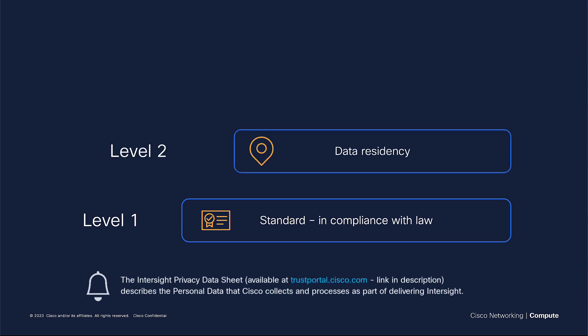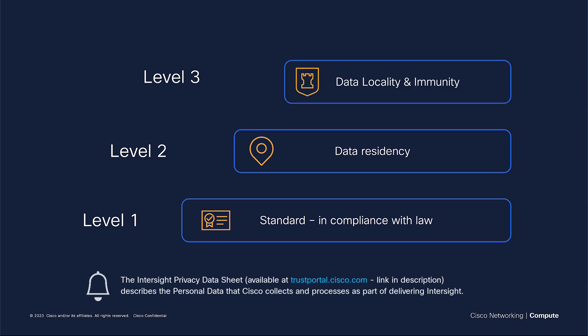Level two means data residency, and that ensures that your data lives in the EU, but it's not completely restricted from leaving the country. Level three means restricting your data from leaving the country and providing full immunity to access from non-European countries. The Intersight EMEA region provides data residency — so level two — and this can help you comply with German law.